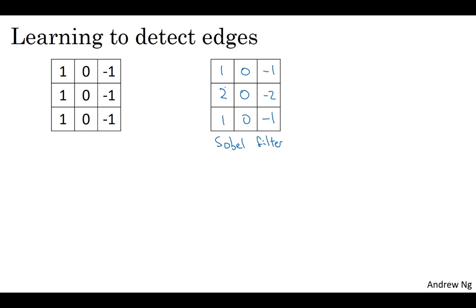The advantage of this is it puts a little bit more weight to the central row, the central pixel, and this makes it maybe a little bit more robust. But computer vision researchers will use other sets of numbers as well.